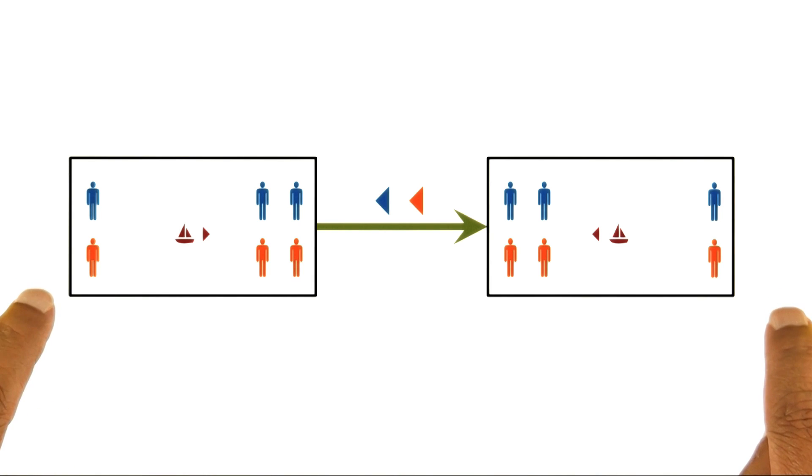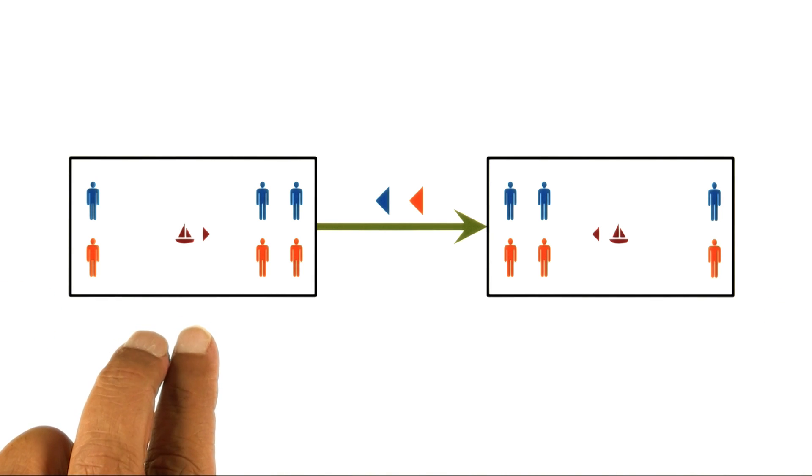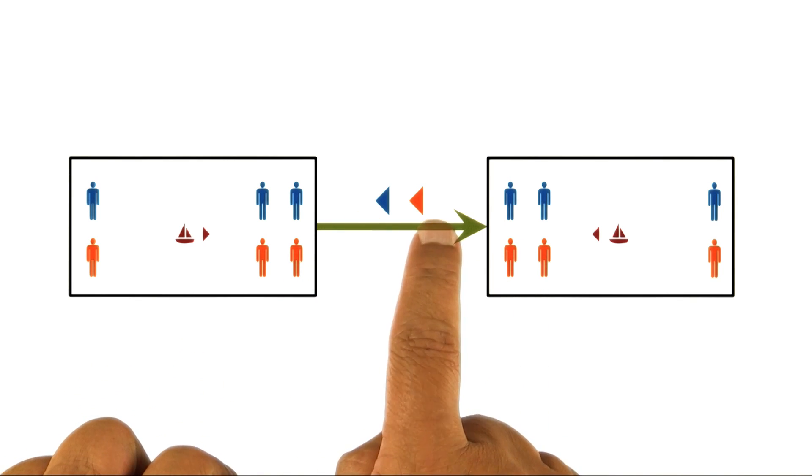So this now is a semantic network. Node, another node, a link between them, and the link is labeled.